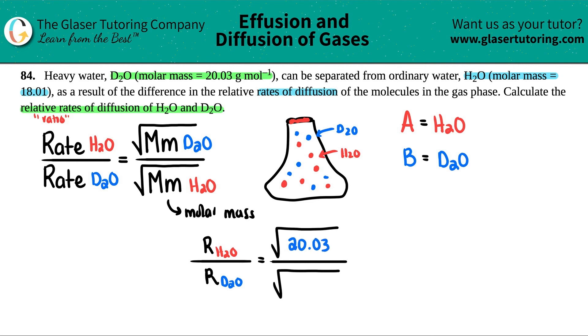And then the H2O one, they told us the mass was 18.01. So I put that on the bottom. Remember, the colors have to cross. And now all we're doing is we're just finding this out.